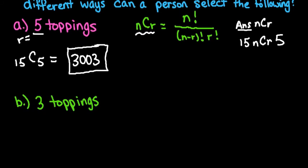For the next one, it's simply the same thing. You have 15 things taken three at a time.